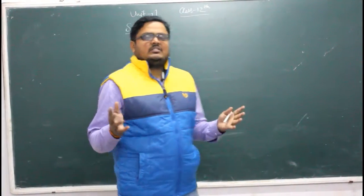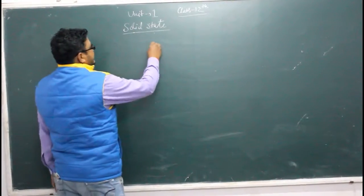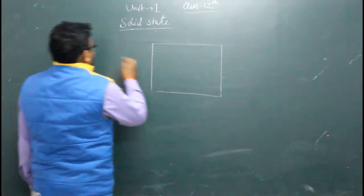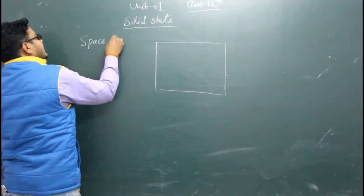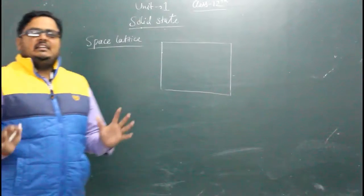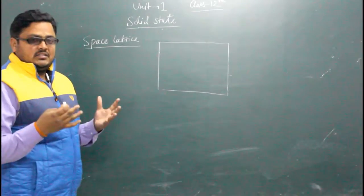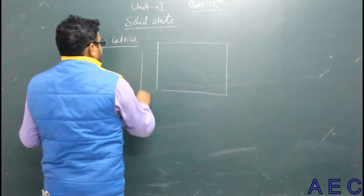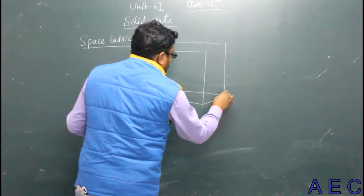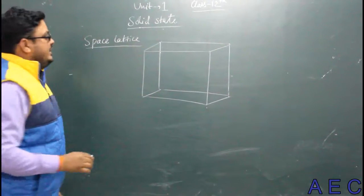After the definition of crystalline solid and amorphous solid and classification of crystalline solid, we now introduce a term known as space lattice. The three-dimensional arrangement of crystalline atoms, molecules, or ions in three-dimensional space is known as space lattice. The three-dimensional arrangement of constituent particles in space is known as space lattice.